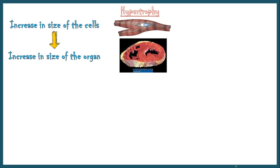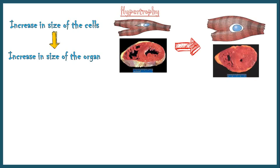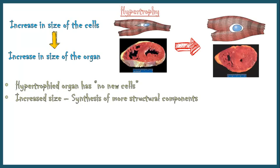When the cell undergoes hypertrophy, the size of the myocardial cell increases. Consequently, the thickness of the ventricular wall also increases. A hypertrophied organ has no new cells, just larger cells. The increased size of the cells is due to the synthesis of more structural components.